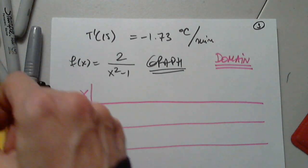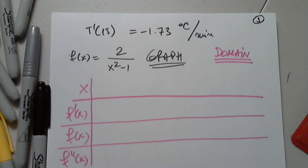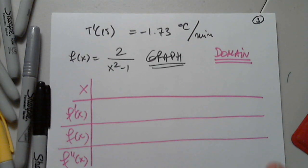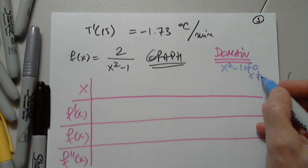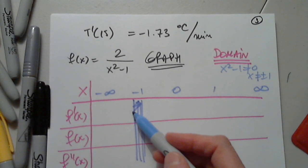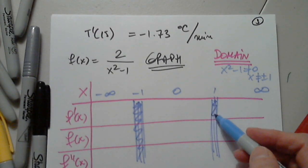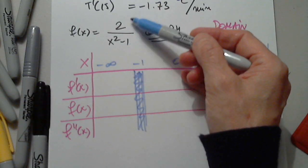The domain: x squared minus 1 cannot equal zero, which means x cannot be plus or minus 1. So the domain is negative infinity to negative 1, union negative 1 to 1, union 1 to infinity. Since the function is undefined at negative 1 and 1 with no factor to simplify, those are the key restrictions.